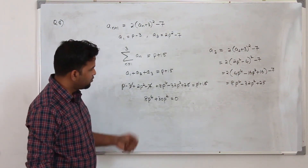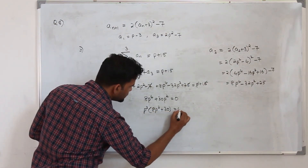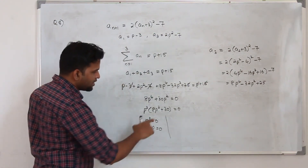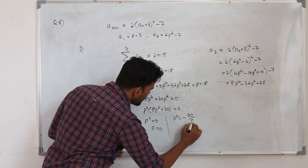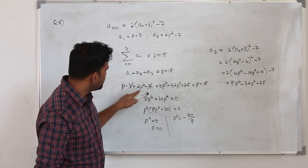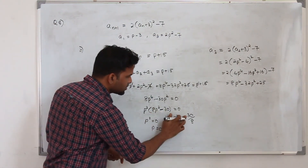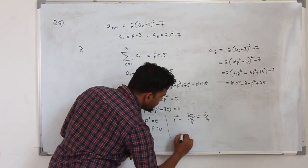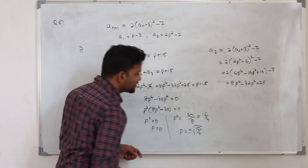Setting each factor to zero: p² = 0 gives p = 0 as one solution. Setting 8p² − 30 = 0 gives p² = 30/8 = 15/4. So p = ±√(15/4) = ±√15/2. Since we want a₂ = 2p² − 7, we don't need to find p explicitly — substitute p² directly.